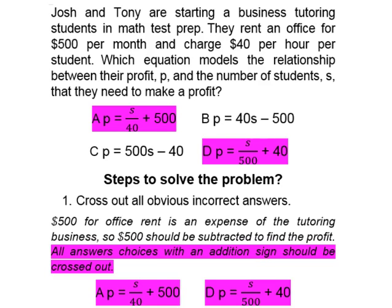The reason we can cross out A is because it is dividing the students by 40, but if they're charging $40 per hour per student, that means for every student and every hour they will receive $40. So if we had one student, S would be 1 divided by 40, and that's incorrect.